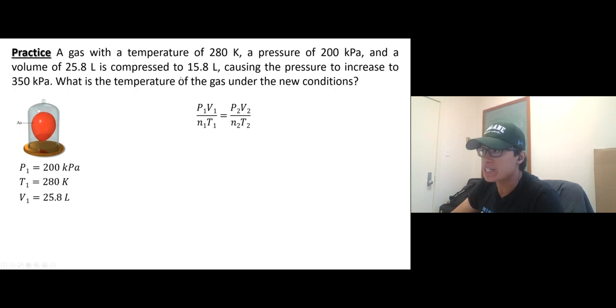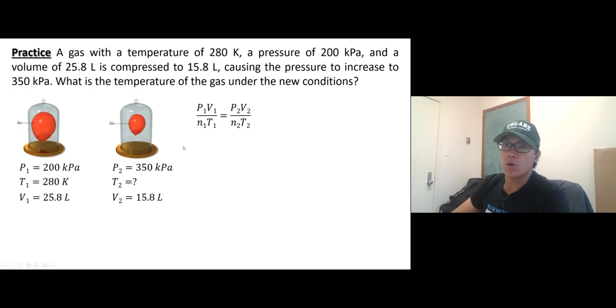That's situation one. It's compressed to 15.8 liters, causing the pressure to increase to 350 kilopascals. What is the temperature of the gas under the new condition? We're looking for temperature. In this case, it doesn't mention anything about the moles—the amount of gas—so it looks like nothing is leaking.